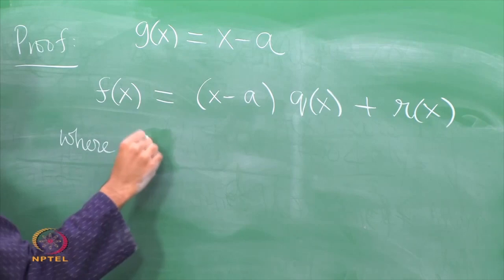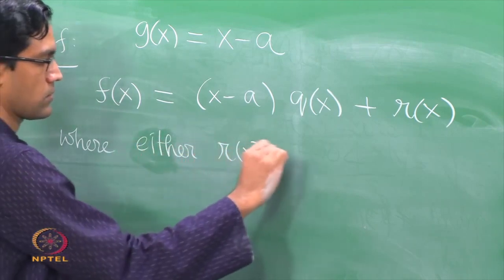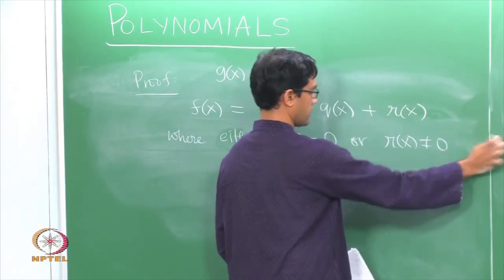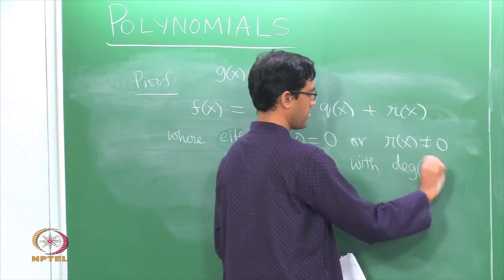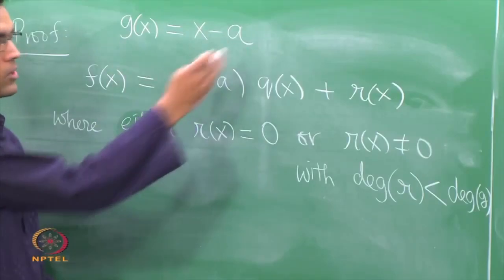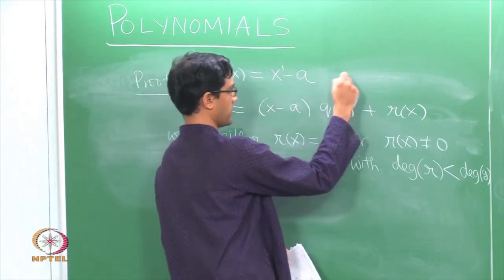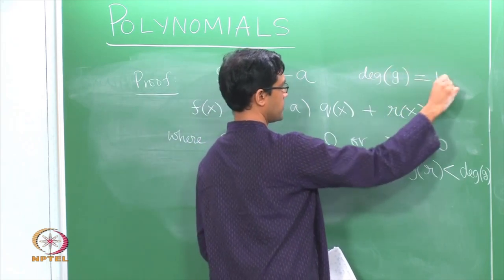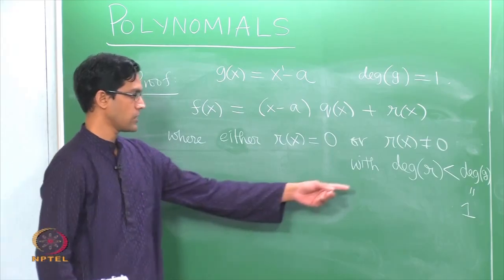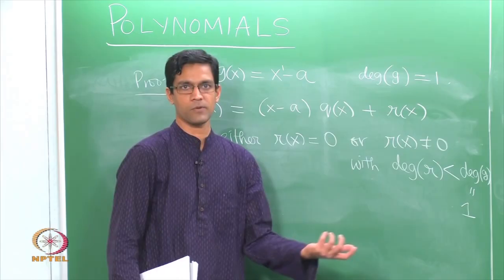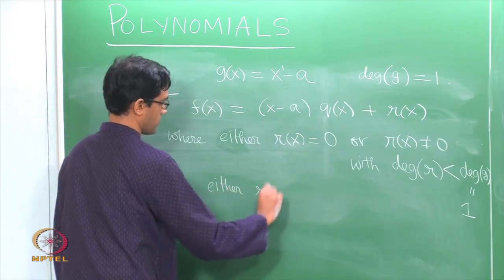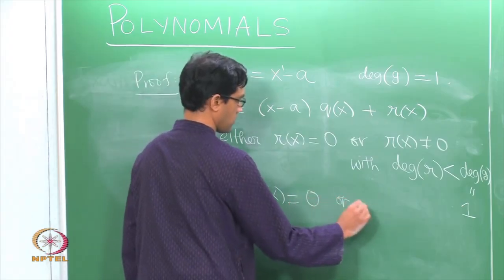What is the property of the remainder? Either the remainder is 0, or it is nonzero and has degree strictly smaller than the degree of the polynomial g. Now observe g is just the polynomial (x − a), so it has degree 1. So the degree of the remainder r must be strictly smaller than 1, meaning it can only be 0. Therefore we conclude that either r(x) is 0 or r(x) has degree 0.